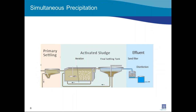The strategy Brookfield uses is called simultaneous precipitation — a very common method where chemical is added to the activated sludge system. In this case, alum is added between the aeration tank and the final settling tank. The precipitated HMOs with adsorbed soluble P and entrapped particulate P are settled out in the final settling tank and removed with waste activated sludge.